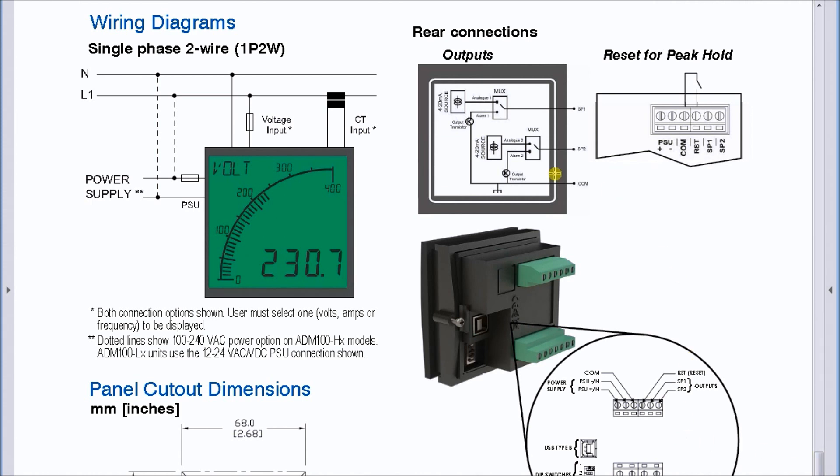If we look at the wiring diagram itself, we have a single phase two-wire configuration. If we have the DC model, which we do, then we bring in the DC here. If we have the AC, we can go anywhere from 100 to 240 and usually we just bring it through the line down to the unit.